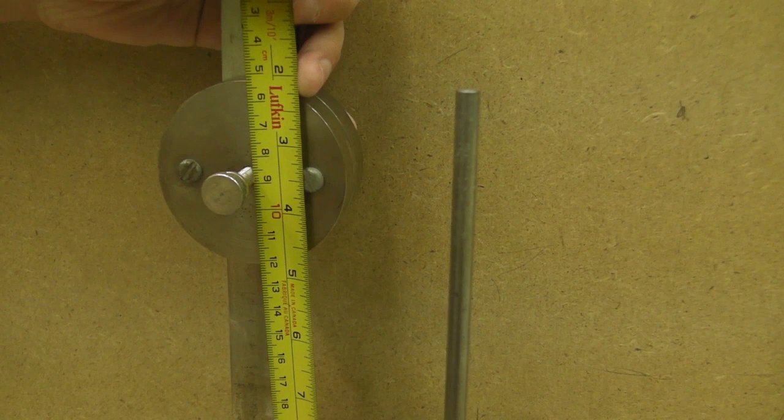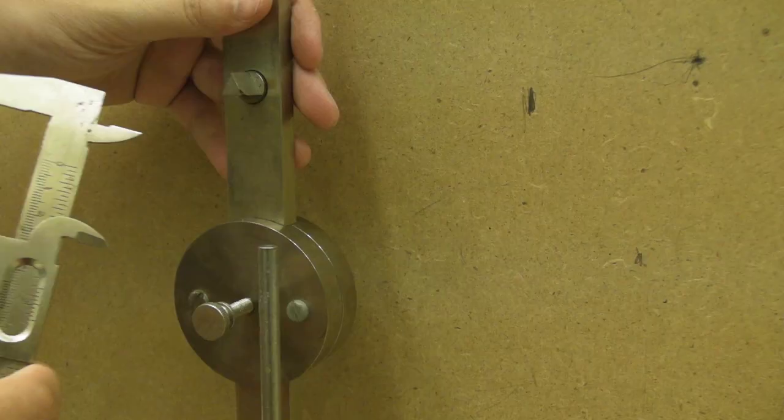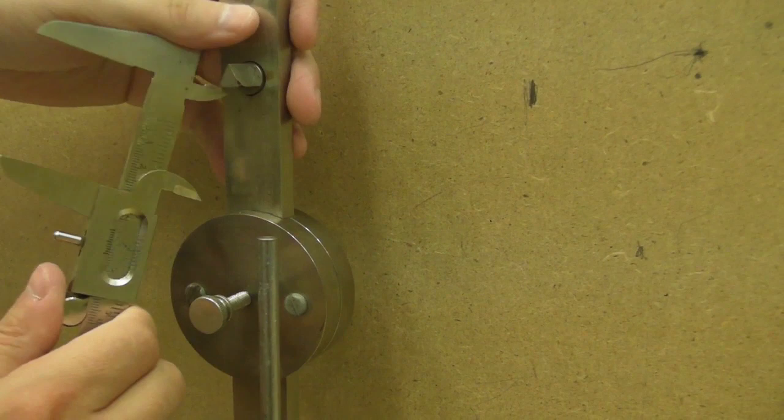Measure the period for five or six positions near and surrounding the equal period point. For each of these positions, carefully measure the small bob position using the vernier calipers.